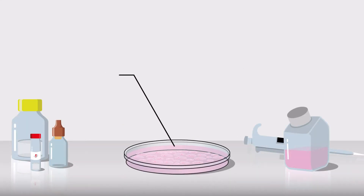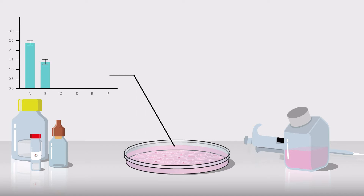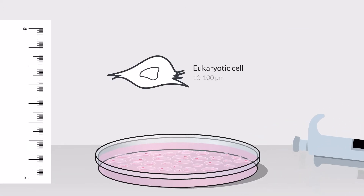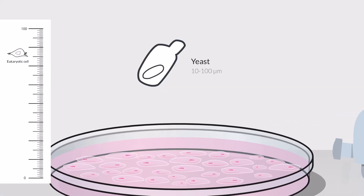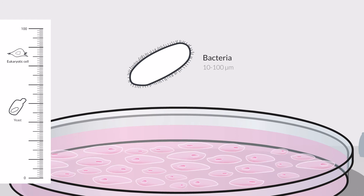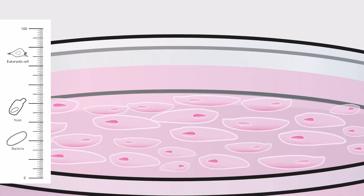Does your research depend on reliable and consistent cell culture? Mycoplasma contamination is a major problem in cell culture, and unlike yeast and bacteria, you can't just look under a microscope and see it.